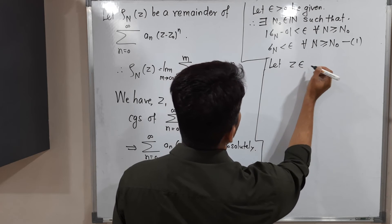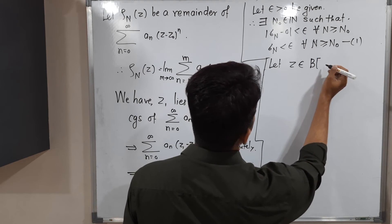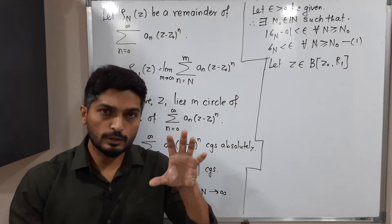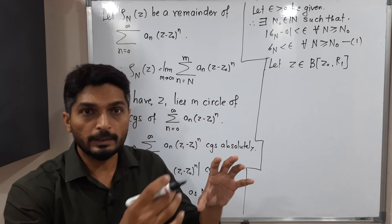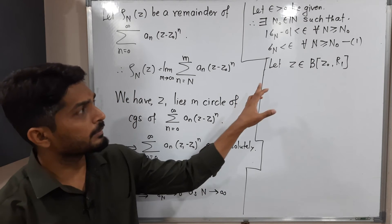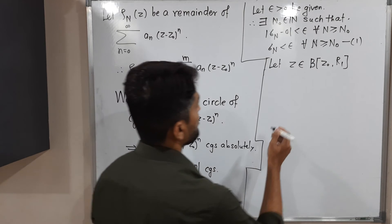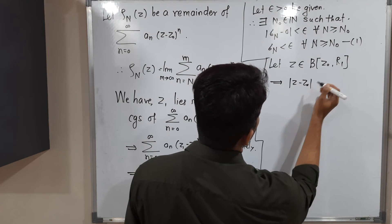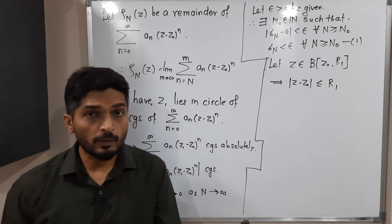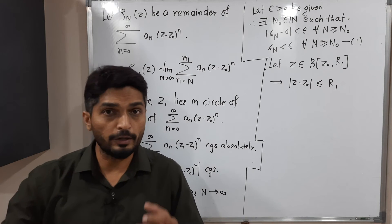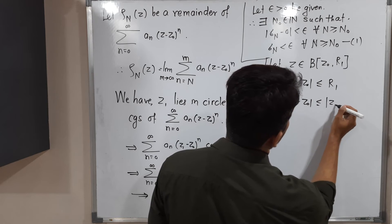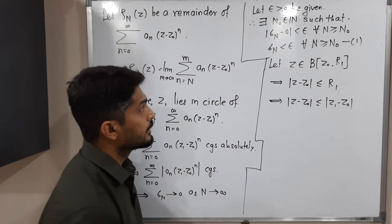Now let z belong to the closed disk with center z₀ and radius r₁. Since we have to prove uniform convergence for any point from that smaller closed disk, we take that point z. This implies the distance of z from the center z₀ satisfies |z - z₀| ≤ r₁, and r₁ is nothing but |z₁ - z₀|. So |z - z₀| ≤ |z₁ - z₀|. Let us call this statement (2).